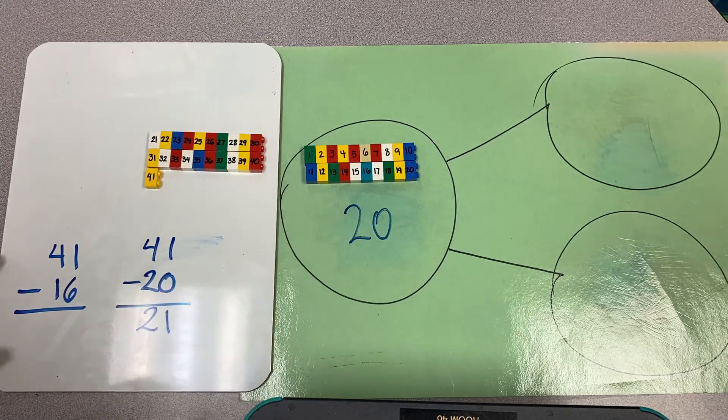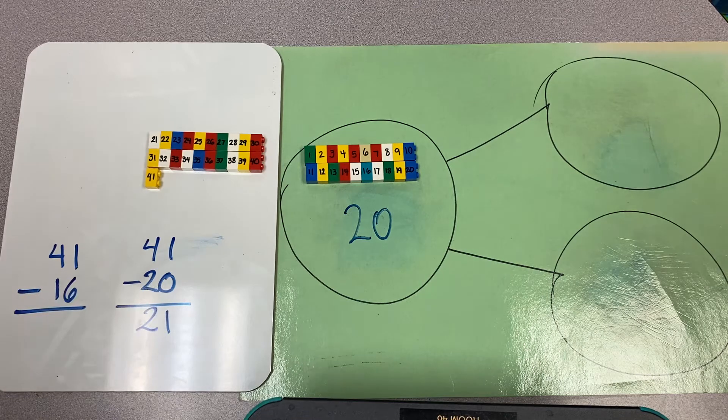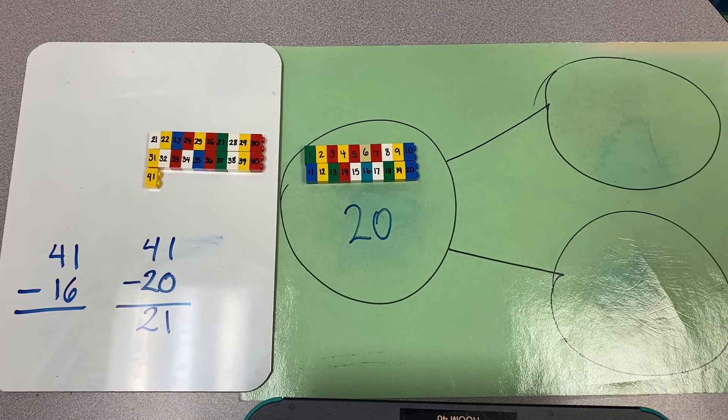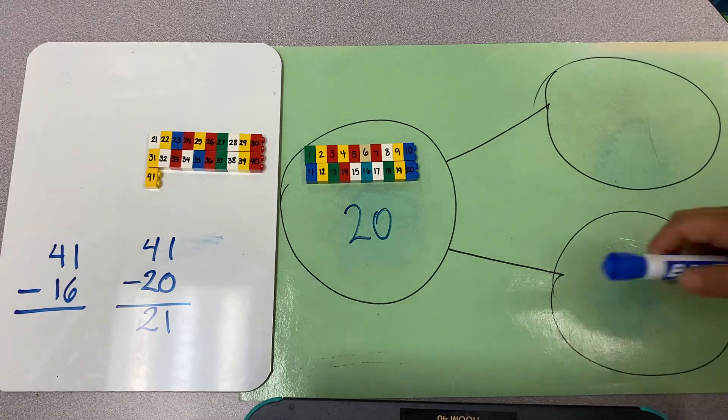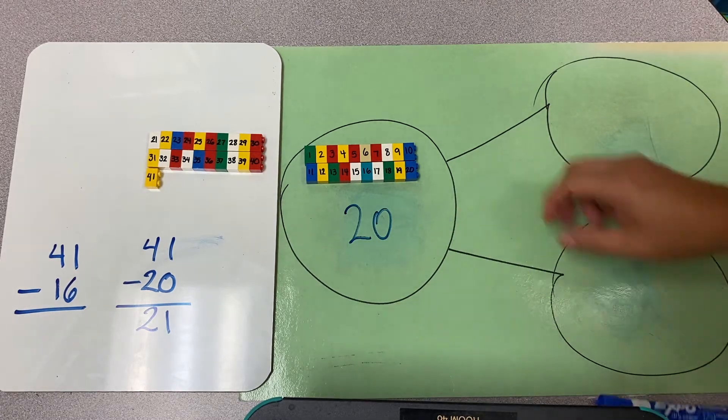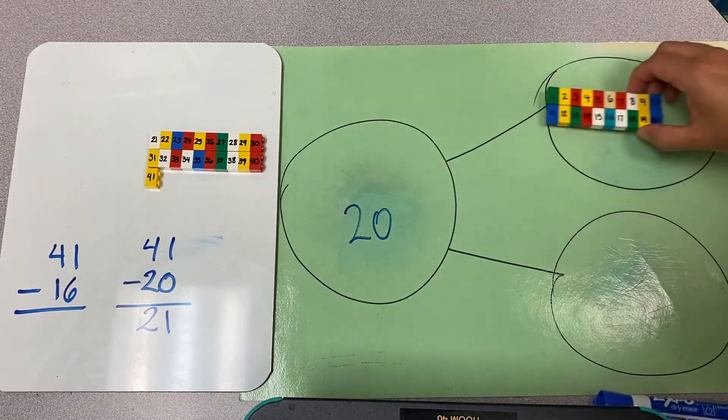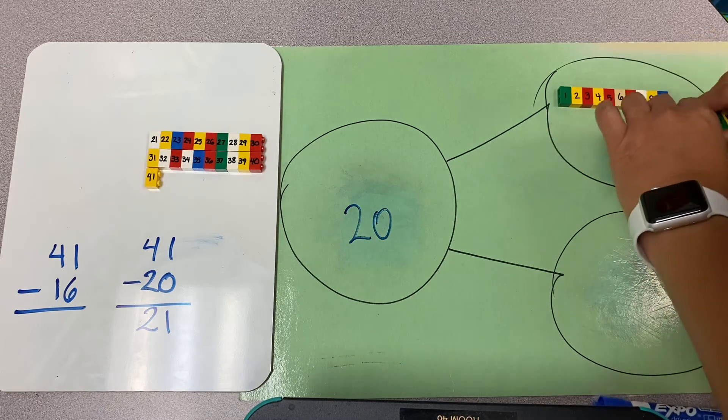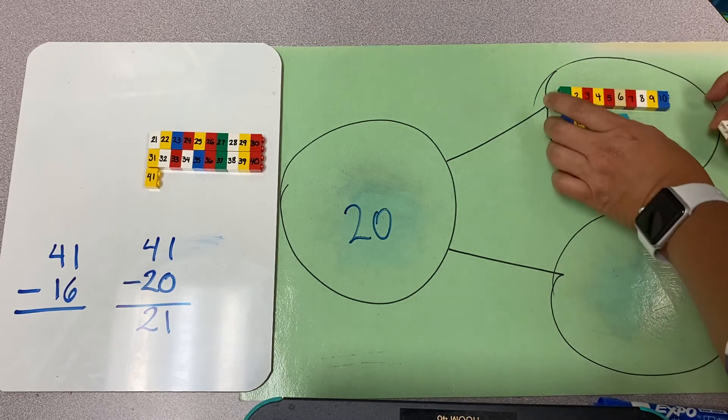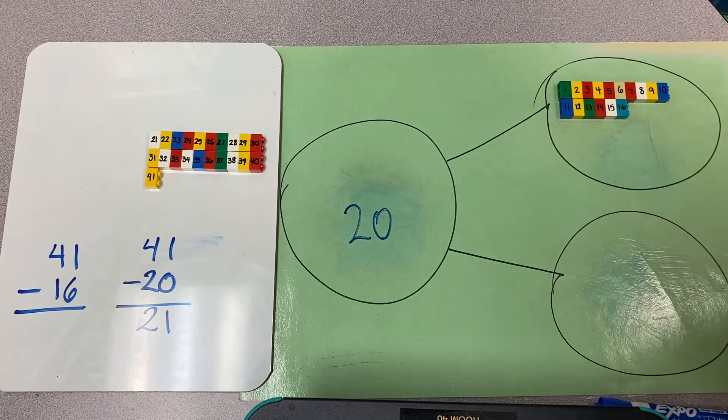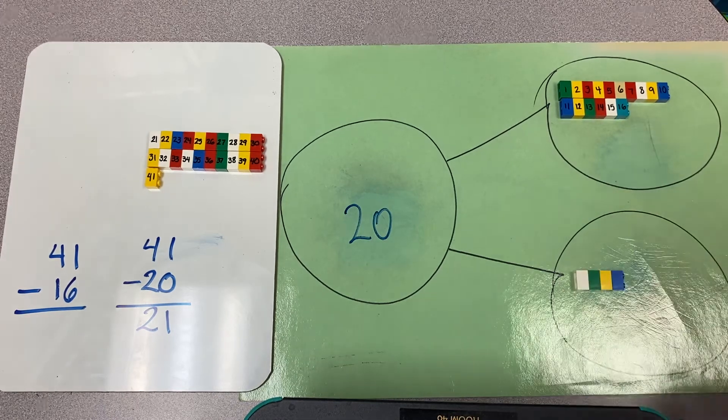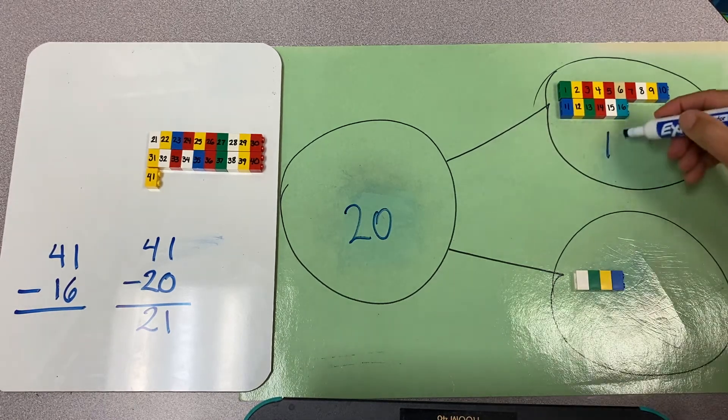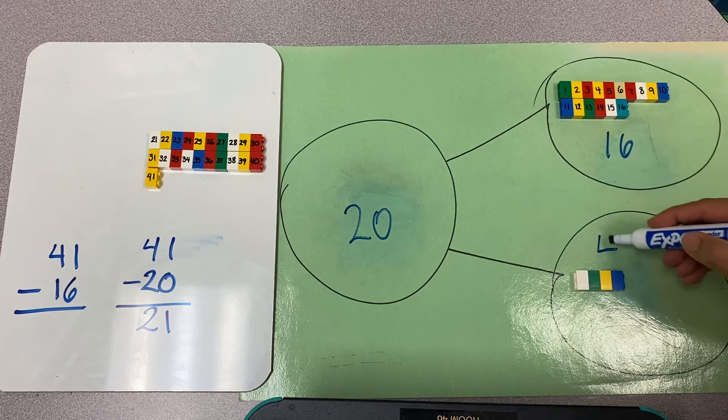But I didn't want to take away 20, I only wanted to take away 16. So I take my 16 to the first part of the number bond. Here are my 16, and the others are extra. So these are 16 and these are four extras.